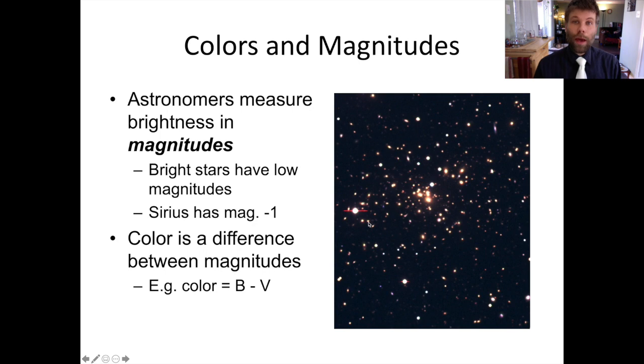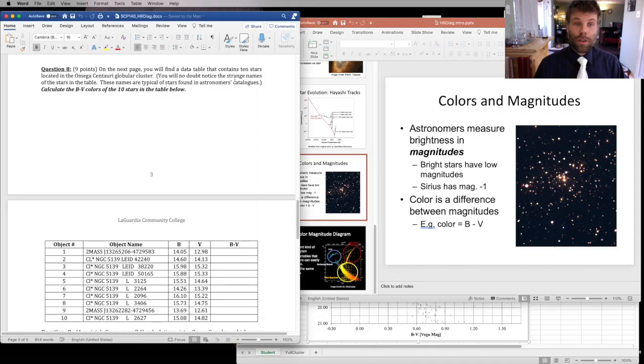So for example, if we had a blue filter and a green filter, which astronomers call visual, or V, we might take the difference B minus V, and that will tell us the color of our star. Question number eight requires you to calculate these B minus V colors for 10 stars whose blue and visual magnitudes I've provided for you. For example, if I come down to the first line here and I say that 14.05 minus 12.98, that's going to give me the B minus V color index for this particular star, which in this case is 1.07. Okay, so you get that one for free. That's a good answer. You get to do the other nine.